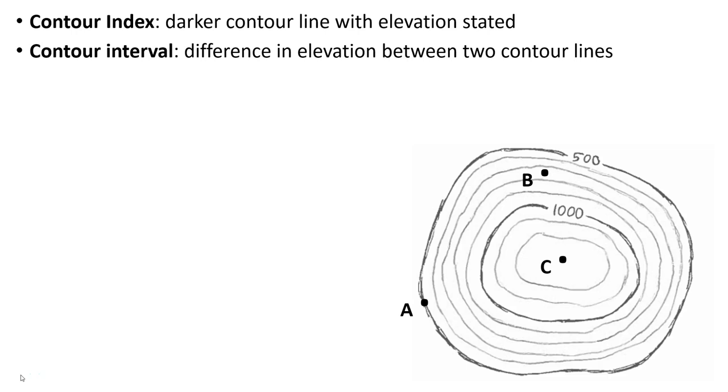First off, just a reminder: the difference between what a contour index is - which is the darker contour line that actually has an elevation stated. So in this example that I've drawn here, we have a couple contour indexes. We have this one at 500, and then we have this other highlighted one at 1,000. The contour interval is that difference in elevation between any two contour lines.